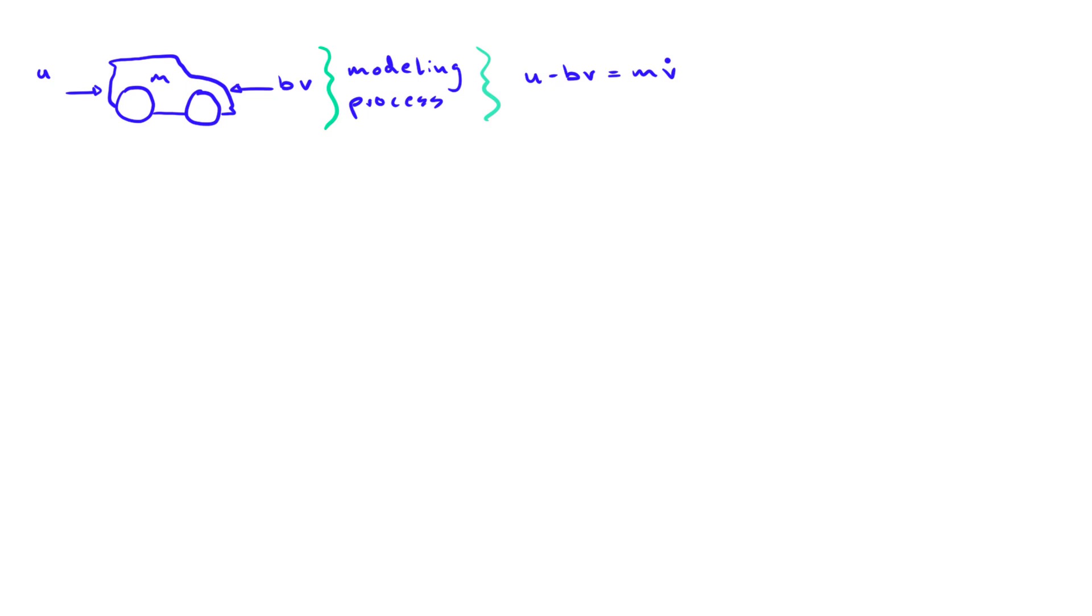With an ODE like this, the simplest way to do so is to rewrite it such that we isolate the highest output derivative on the left-hand side. In this case we have the following.